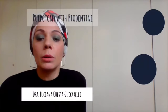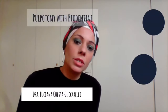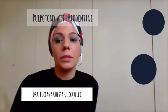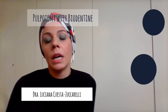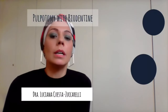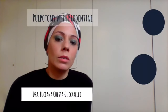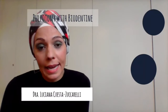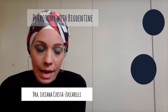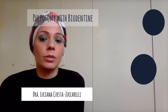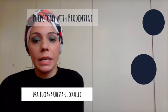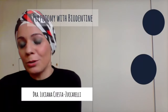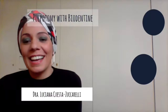Throughout history, many pulp agents have been used to perform pulpotomies on temporary teeth, such as formocresol, zinc oxide eugenol, glutaraldehyde, calcium hydroxide, ferric sulfate, osteogenic proteins, laser, electrocoagulation, etc.